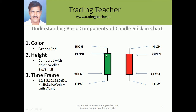The color is green or red — it is the body. The green color candle opens at the lower side and closes at the higher side. The red color candle opens at the higher side and closes at the lower side. High and low are the same; the only difference is open and close. The time frame of this candle matters a lot.